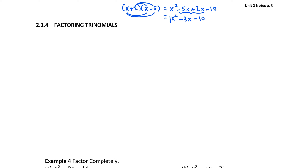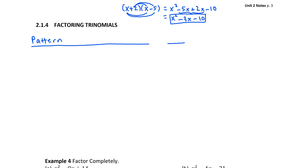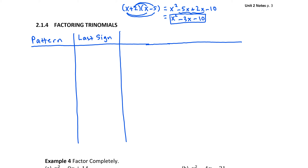When we factor, we're going to start with a trinomial and determine what the two original factors were. I'm going to show you a table of all the different patterns you might run into and how to think about factoring these trinomials. We'll look at the pattern of the trinomial, what the last sign tells us, and what the first sign tells us, and we'll use that to figure out our binomial factors.